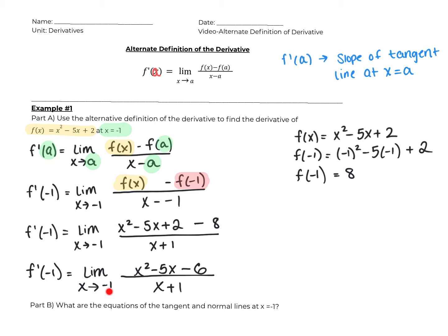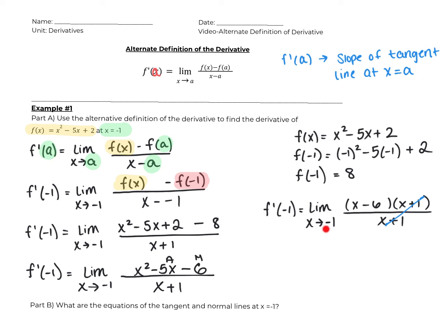If you try direct substitution, you will get zero over zero, so we need to try some factoring methods. Using add-multiply for the top: what adds to negative five and multiplies to negative six gives us x minus six times x plus one. The x plus one cancels. So to find the limit as x approaches negative one, we directly substitute: negative one minus six, which is negative seven. So f prime of negative one equals negative seven.